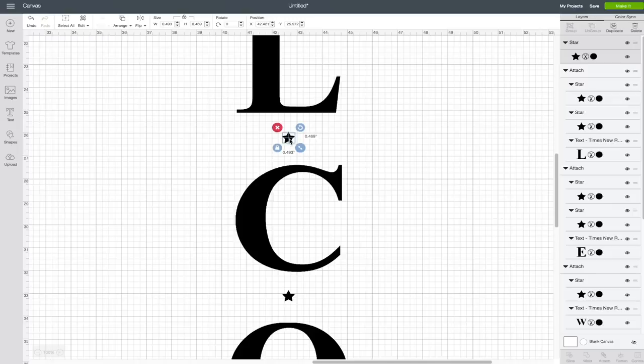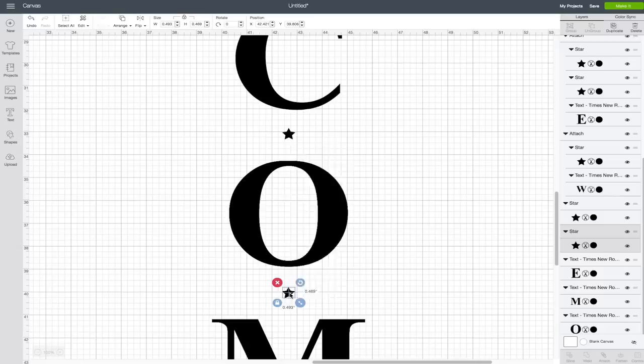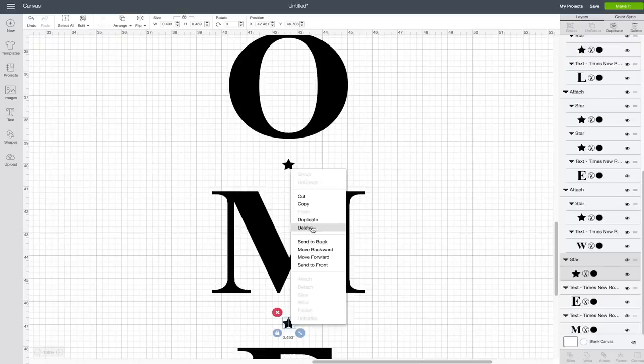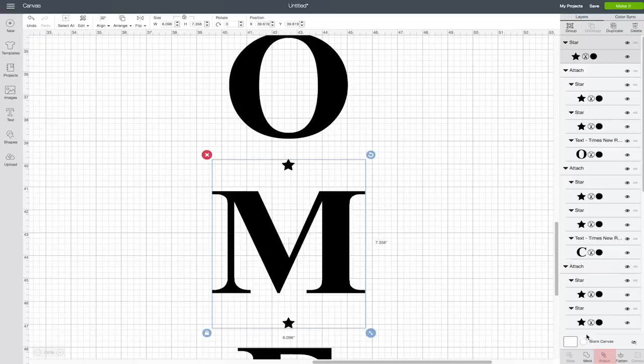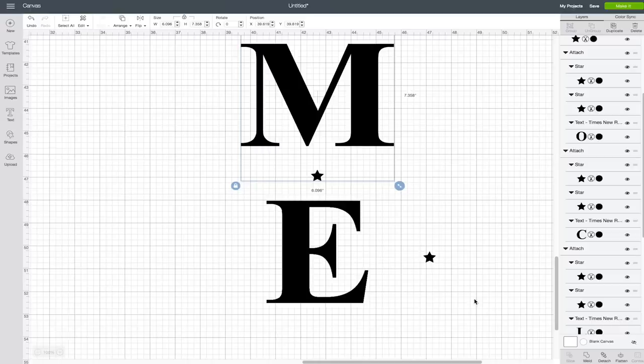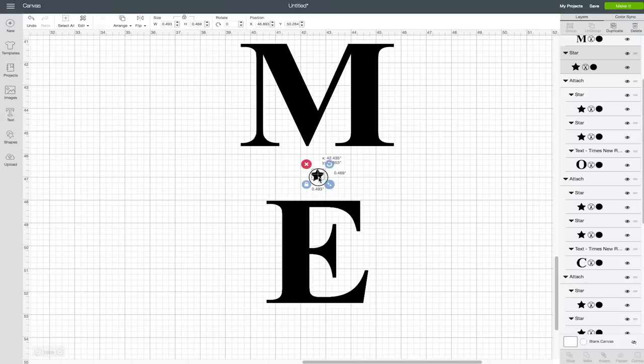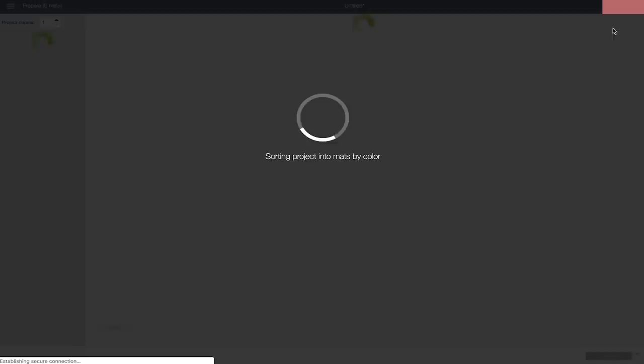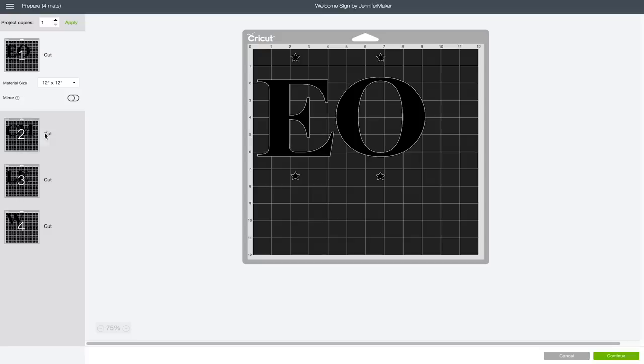We need to attach things together so that our stars stay with our letters. We're gonna duplicate this star, cause we're gonna need some extra copies. Then I want you to select the W and a star, and click attach down in the lower right. You're going to be attaching stars to letters. The top and bottom letters only need one star each, but the middle letters are gonna need a star above and below, so that you can match it up to the letters that come above and below it. Make sure that you have a star at the top, and then your letter, and then a star at the bottom, and that everything is lining up and attaching.